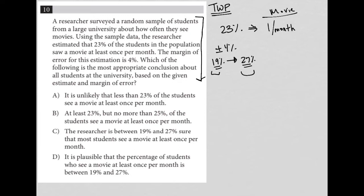The next sentence says, which of the following is the most appropriate conclusion about all students at the university based on the given estimate and margin of error? So choice A says, it is unlikely that less than 23% of the students see a movie at least once per month. Well, that's not true because we saw that given our margin of error, it could be as low as 19%. So it is likely. So A is gone.